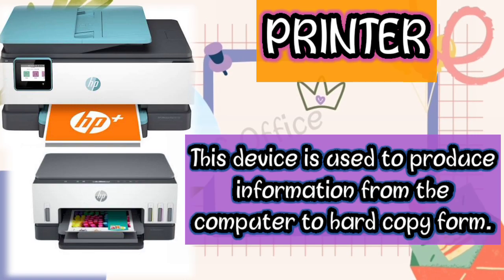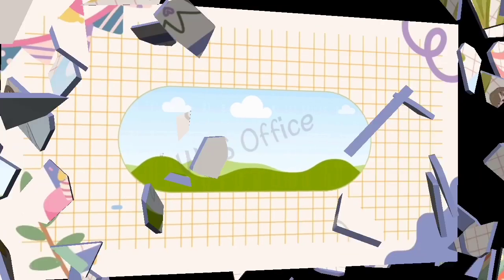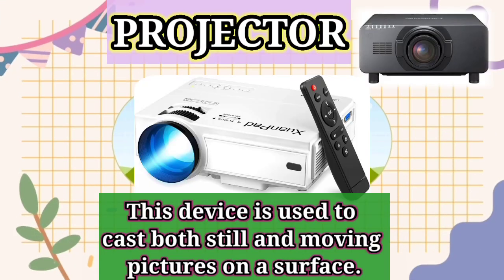Next, we have the printer. This device is used to produce information from the computer in hard copy form. If you want to get information from a computer onto paper, you simply use the printer — that is the work of the printer.